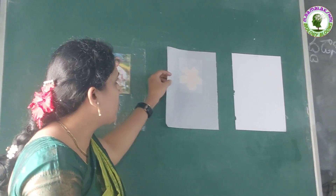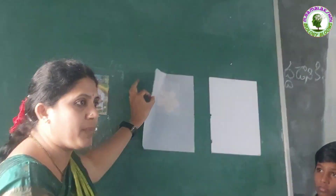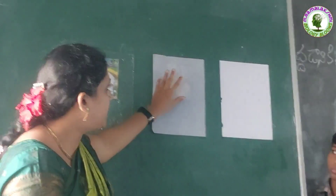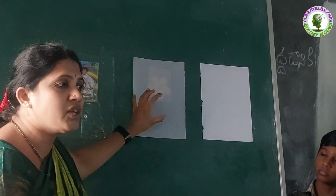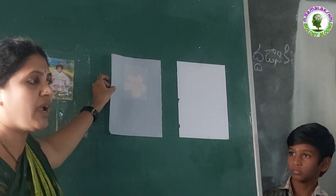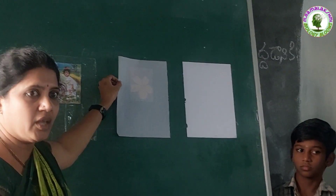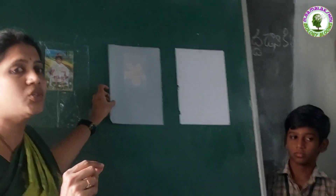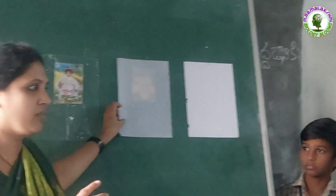Here, we are seeing only a blurred image. It is covered by an oil paper. This type of objects allow the light partially to travel through it. So this type of objects are known as translucent objects. What are they? Translucent objects.